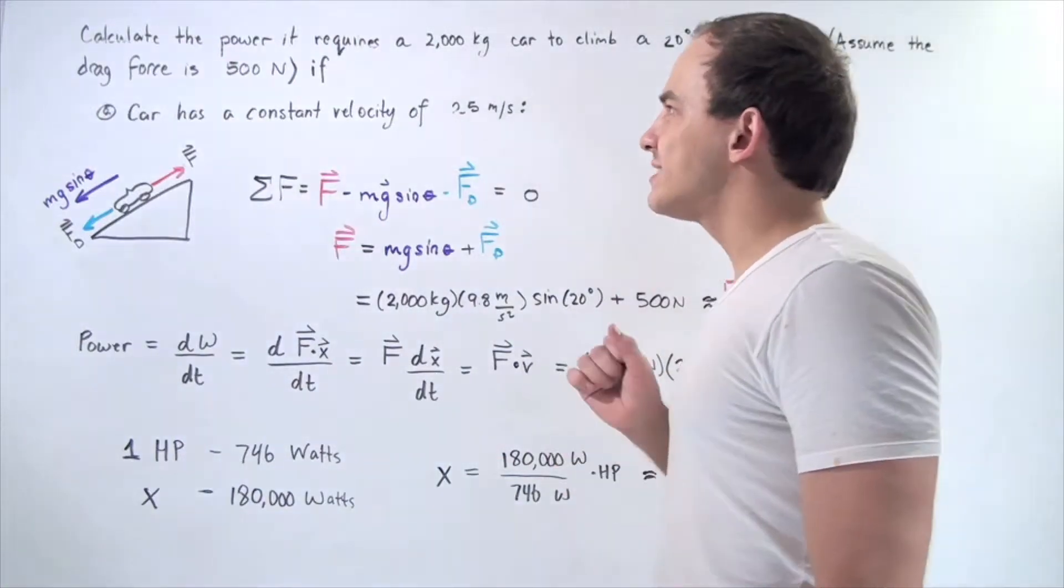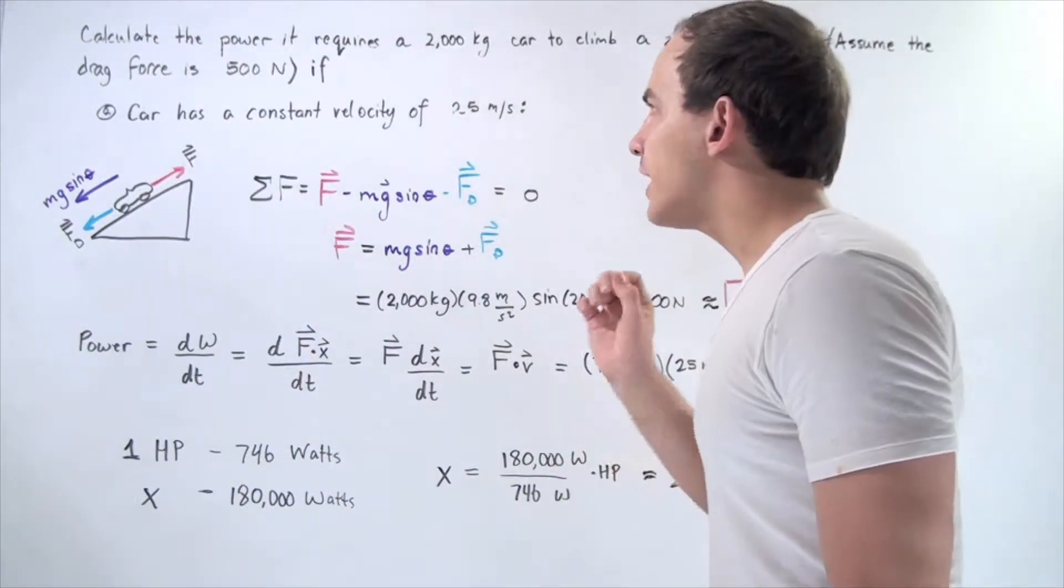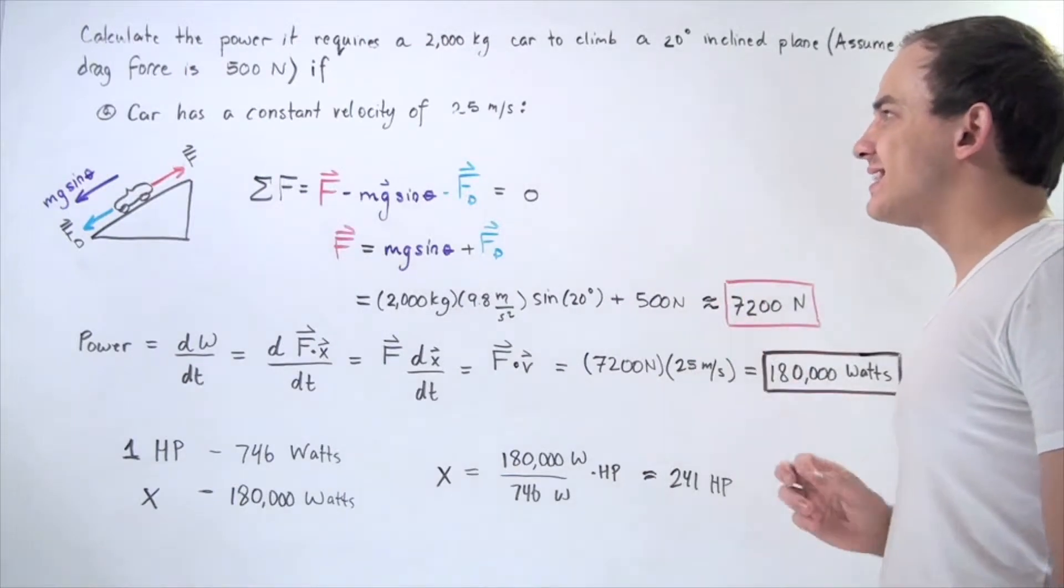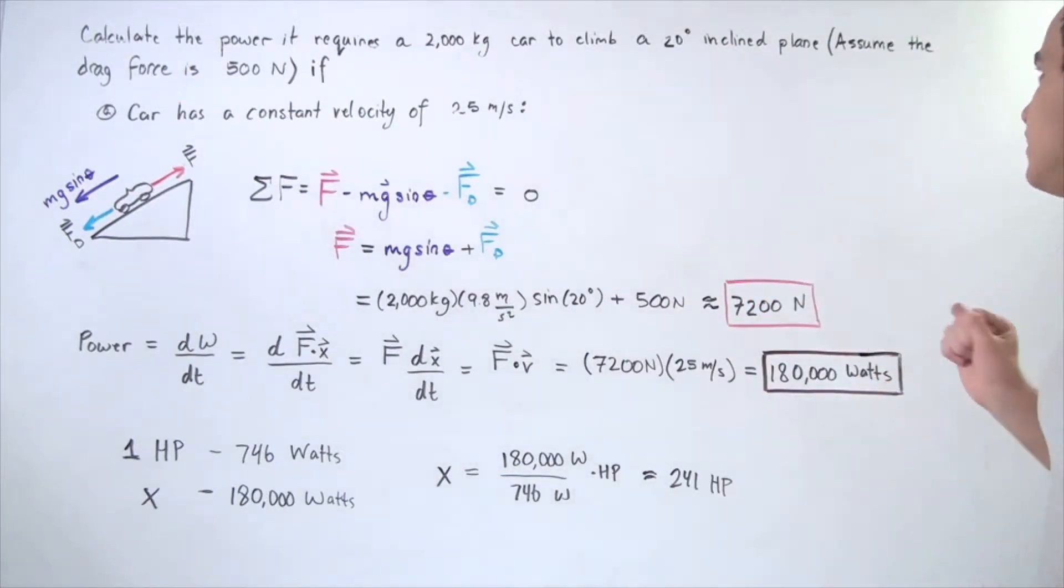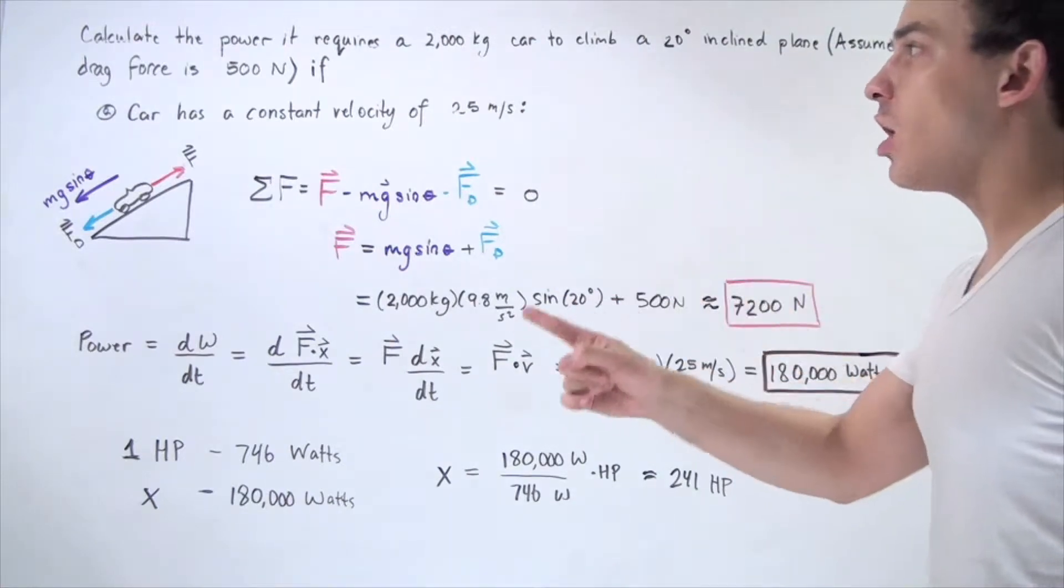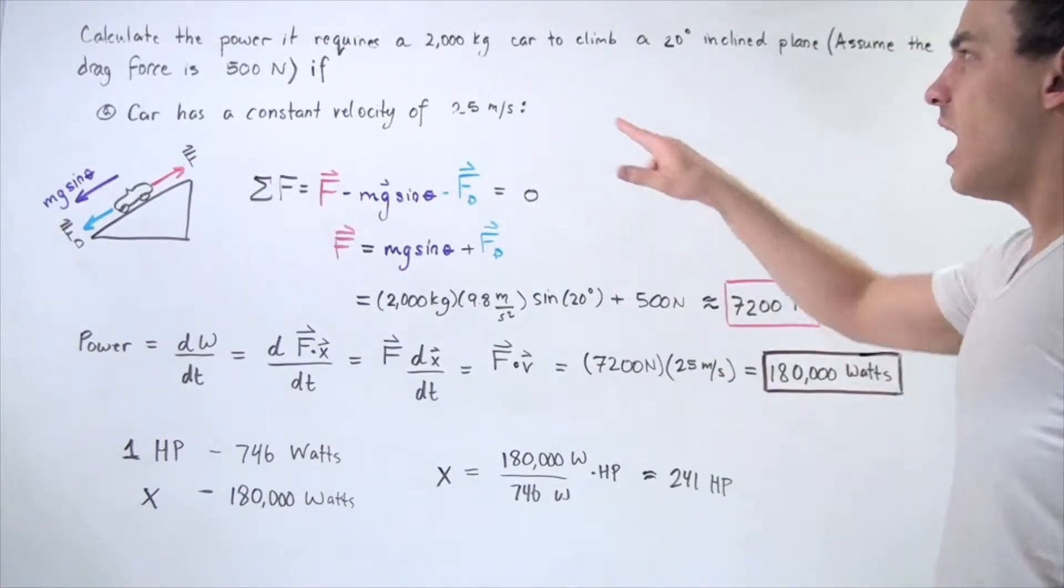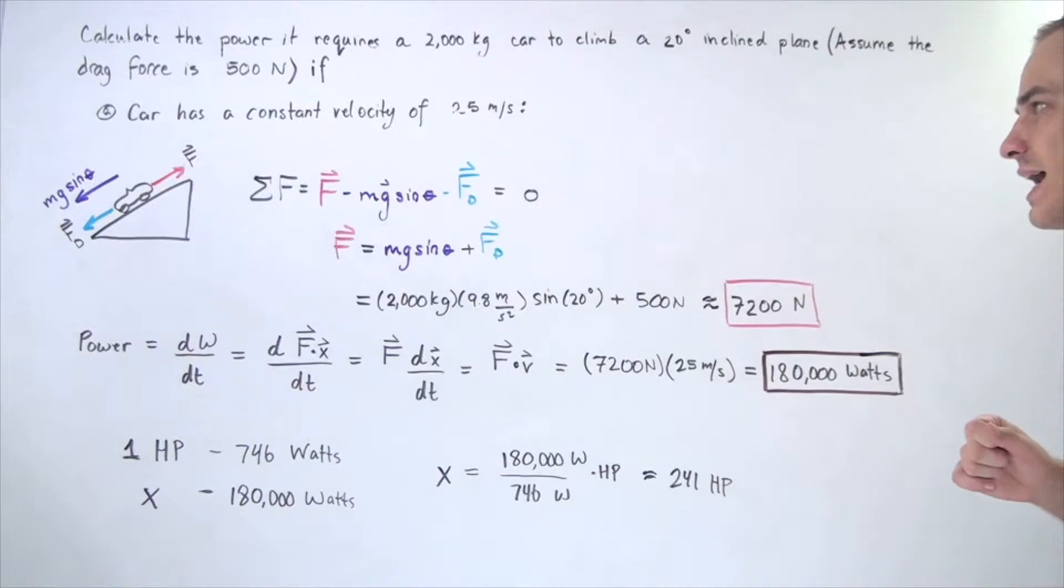Let's suppose we want to calculate the power it requires a 2,000 kilogram car to climb a 20 degree inclined plane if the car has a constant velocity of 25 meters per second.